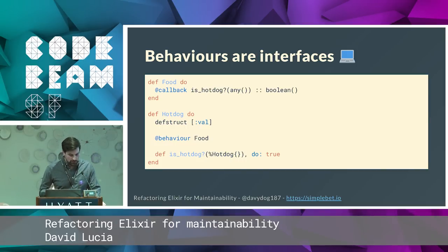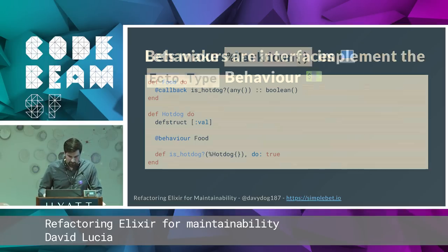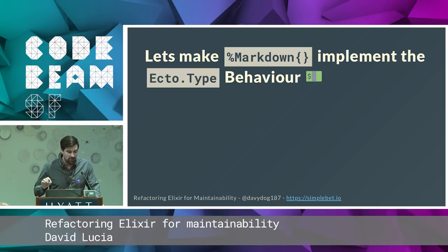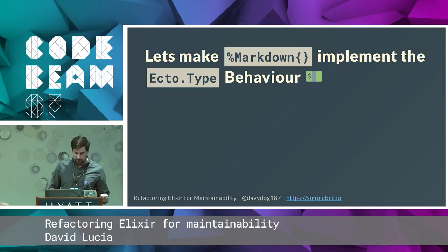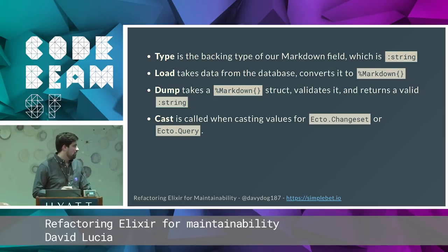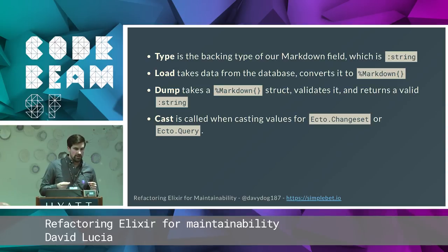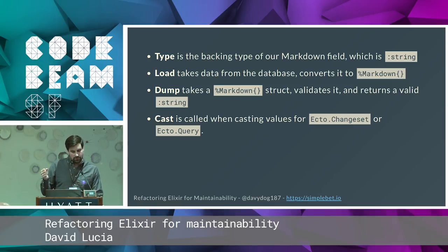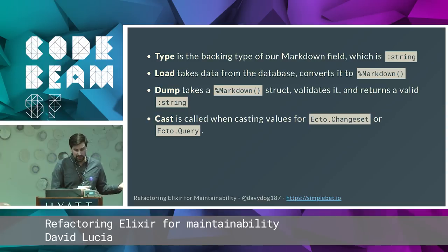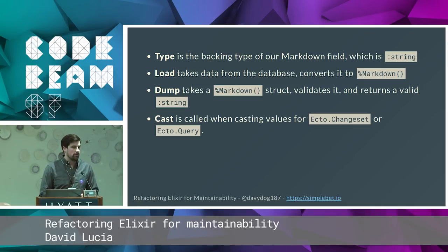We're going to implement the Ecto.Type custom type behavior for markdown, which will simplify our code greatly. The Ecto.Type behavior has four functions to implement. First is the type function — the backing type — where for any given markdown struct, we want to back it by a string, so when stored in the database it's just a string of markdown. When pulling out of the database, we wrap it in a markdown struct. When putting it into the database, we marshal it back into a string. The fourth function is cast, which is used for validation and when using Ecto queries.